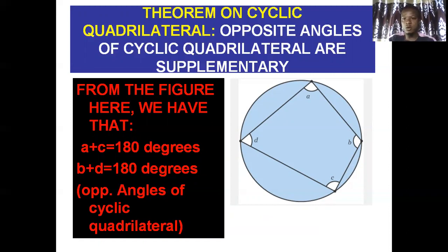Take a look at this quadrilateral very well. Just try to take a good observation on the cyclic quadrilateral. You will find that angle A is facing angle C and angle B is facing angle D. Therefore, A plus C will give us 180 degrees. Also, B plus D will give us 180 degrees. These are called the opposite angles of a cyclic quadrilateral. So the theorem is telling us that if you get into a cyclic quadrilateral, try to figure out the two angles that are facing each other — sum them up, and it must give you 180 degrees.